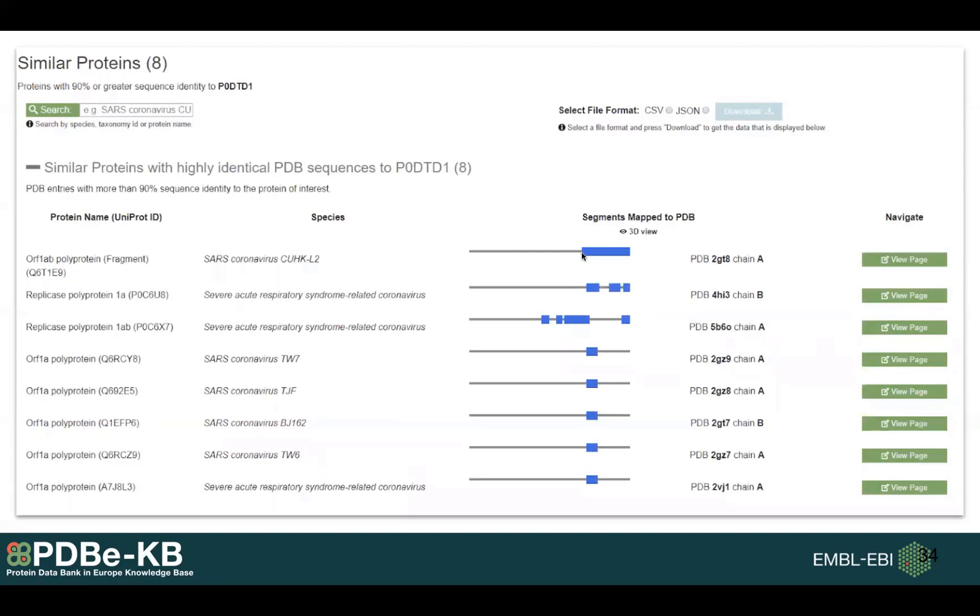It shows you where that PDB is mapped to. For example, this first row says that this particular UniProt has a PDB structure there which is 90% identical to a PDB structure mapped to the same segment of your protein of interest.